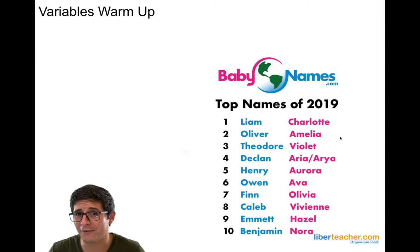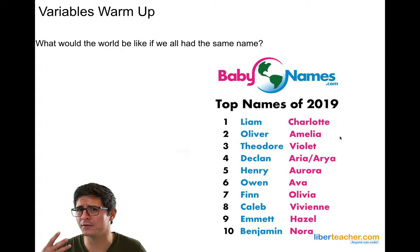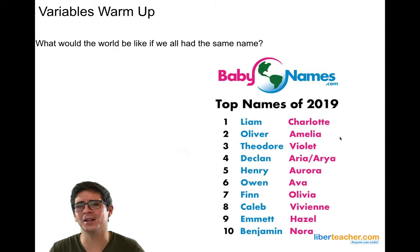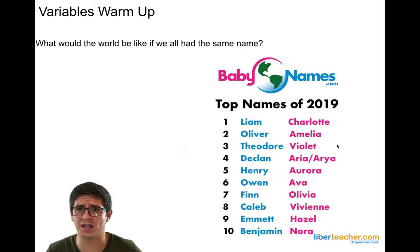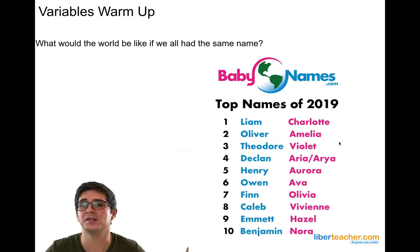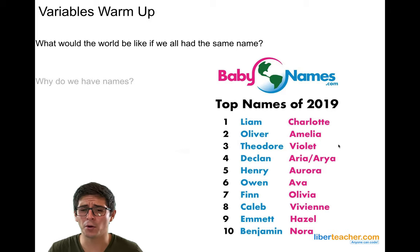So if everybody had the same name, would you want to live in a world like that? For example, let's say everybody's name was Bob, and somebody says, Bob, stand up — and everybody stands up in a room. That could be very confusing, right? So why do we all have different names?